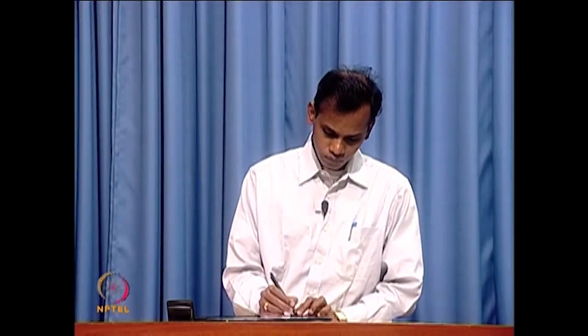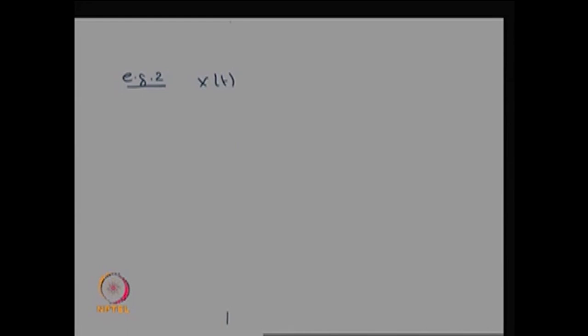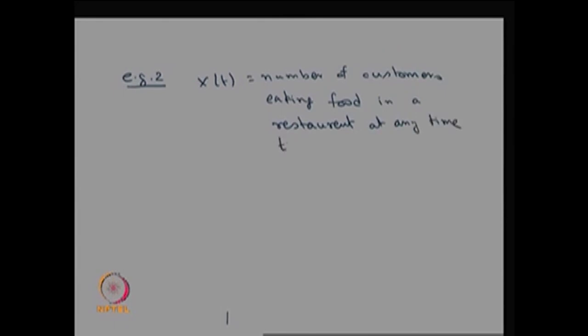In Example 2, let me define x of t as the number of customers eating food in a restaurant at any time t. Therefore, you are observing the system — you are observing the restaurant to see how many customers are eating food.